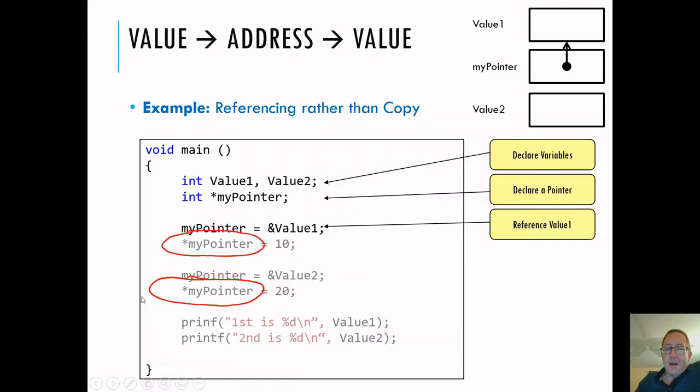I say the dereference of my pointer. So in here, what I'm pointing to in here, I'm going to put the value. Oh, sorry. It's going to put 10. The first one I was going ahead of myself. It's going to put the value 10. I'm pointing to value one. I'm going to put the value 10. The next time I'm going to point to value two and put 20. So it's going to follow up in there, put in the 10.